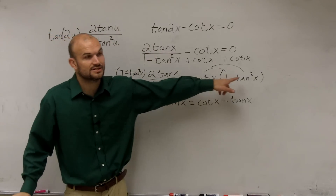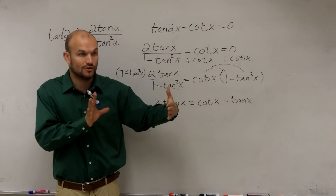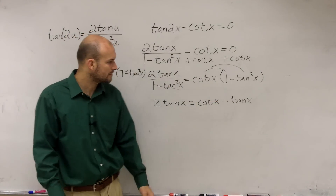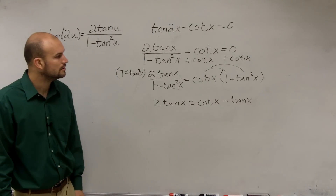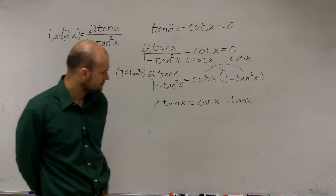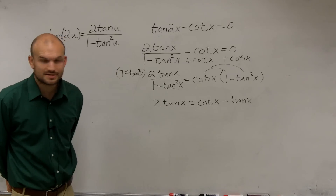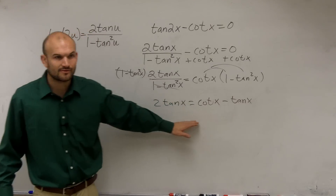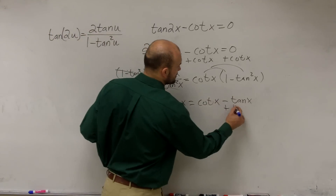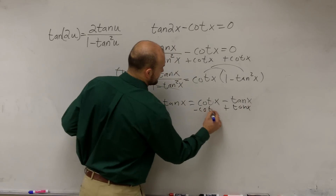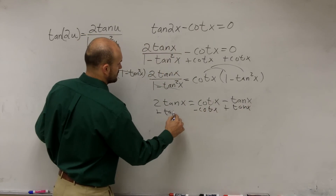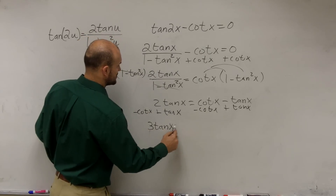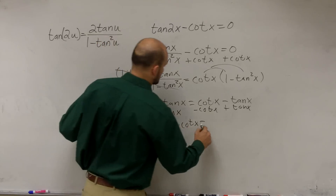This is going to divide up to 1, leaving me with 2 tangent of x equals — applying distributive property — cotangent of x times 1 minus tangent squared, giving me cotangent of x minus tangent of x. Notice cotangent times tangent squared: one cotangent times tangent goes to 1, just leaving one more tangent of x. Now let's get all terms on the same side. Let's add the tangent and subtract the cotangent of x.